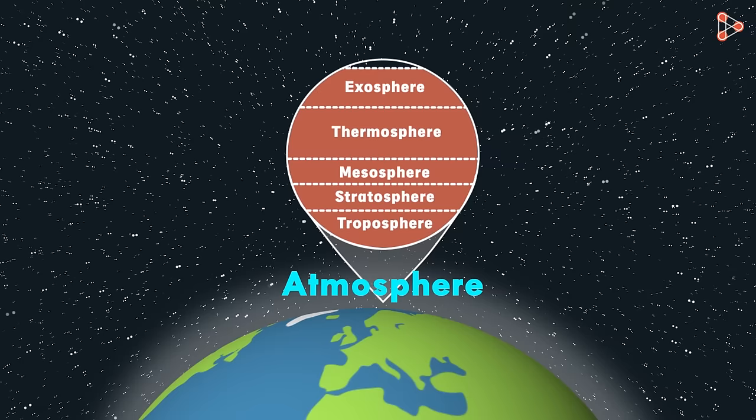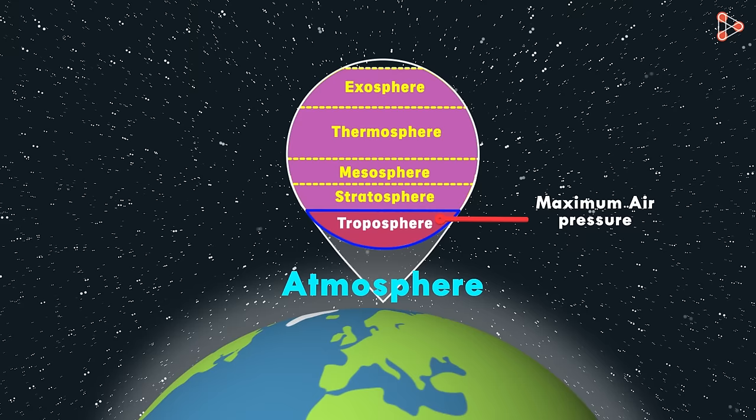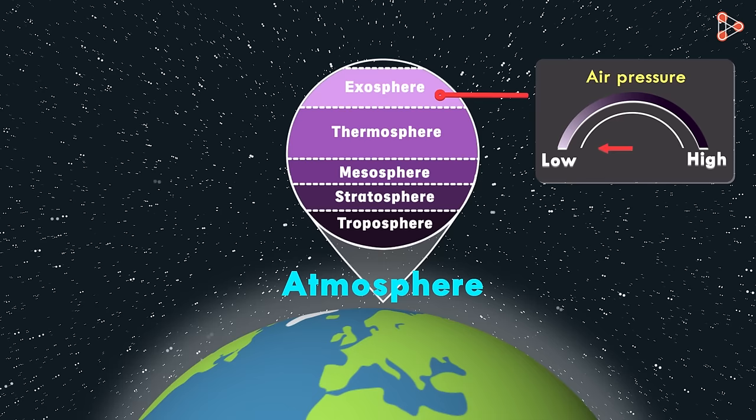Now logically, can you tell me which layer carries the maximum air pressure? Yes! The bottom most layer carries the weight of the air present in all the layers above it. And that's the reason why the air pressure is maximum at this layer. And what can you say about the air pressure at the layers above this point? The air pressure decreases as we move higher.